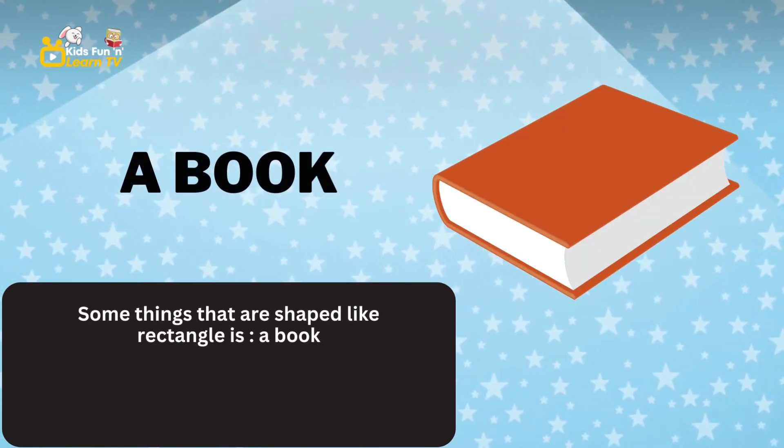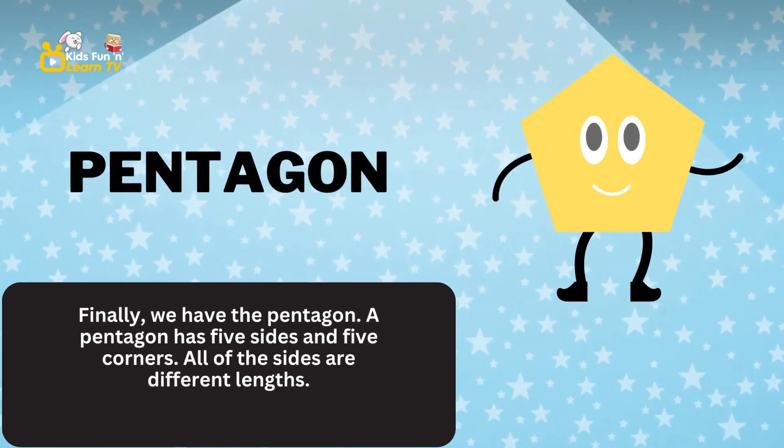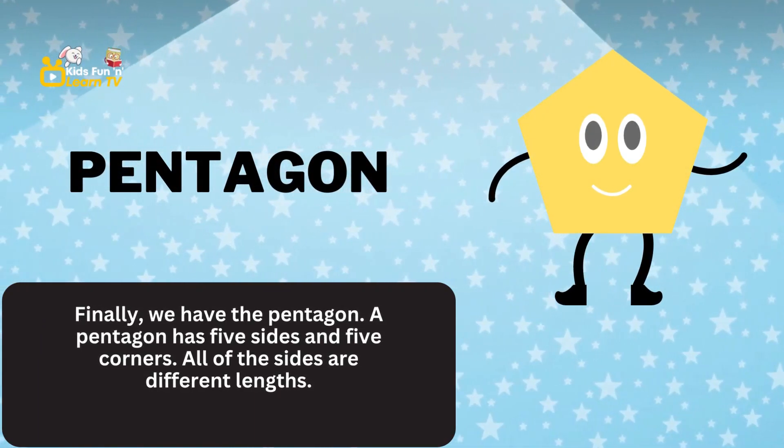Finally we have the pentagon. A pentagon has five sides and five corners. All of the sides are different lengths. Something shaped like a pentagon is a star.